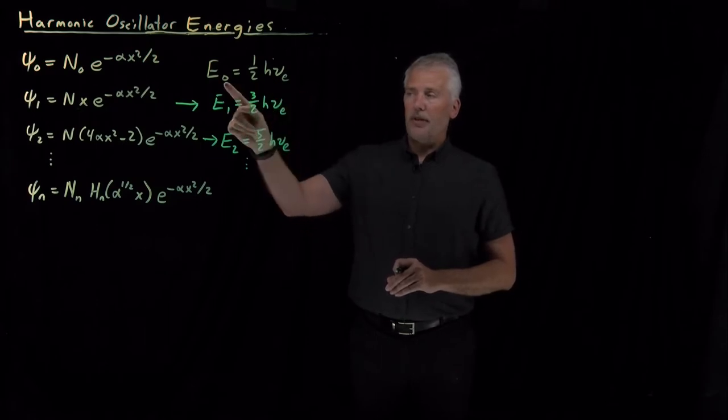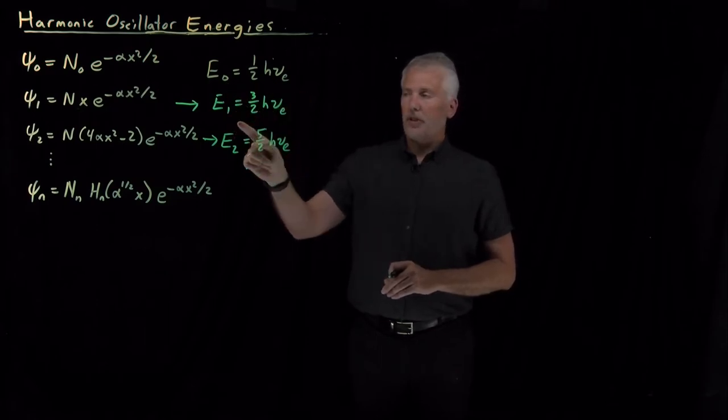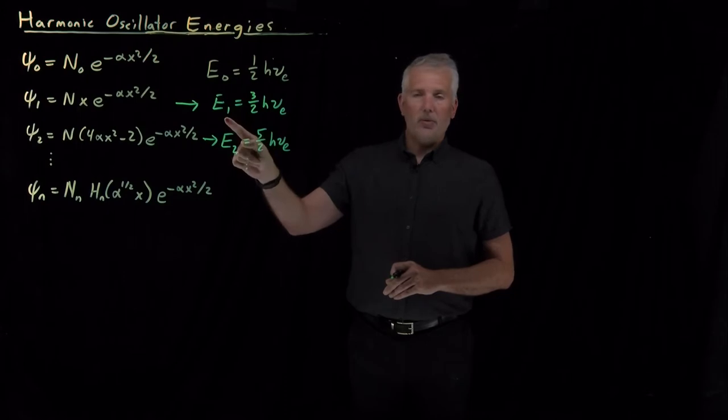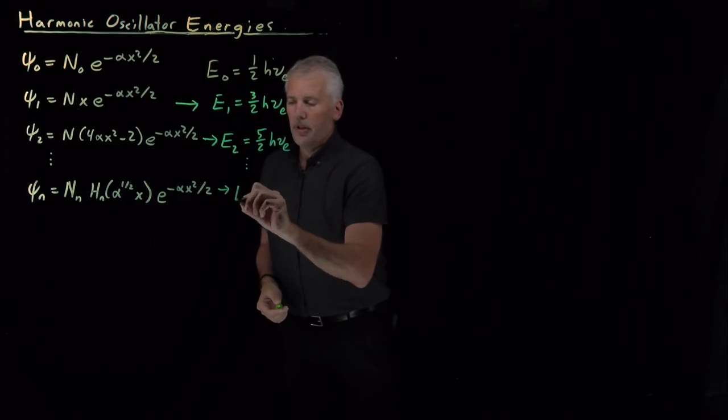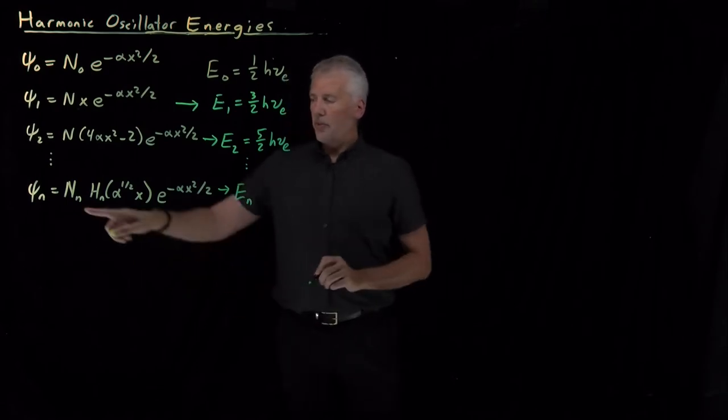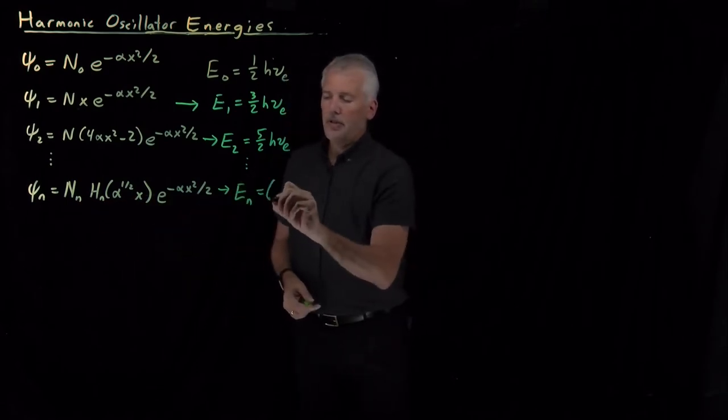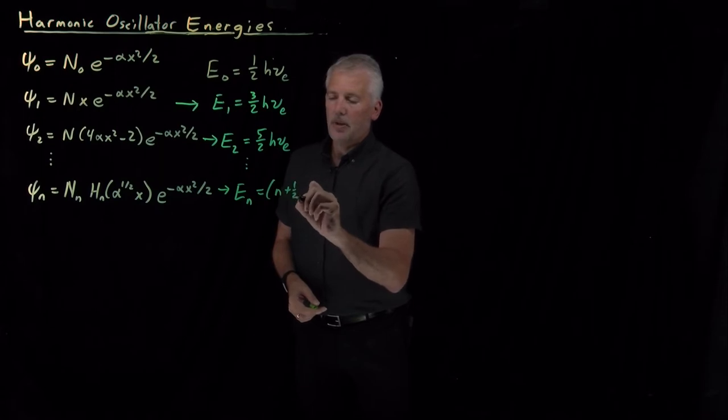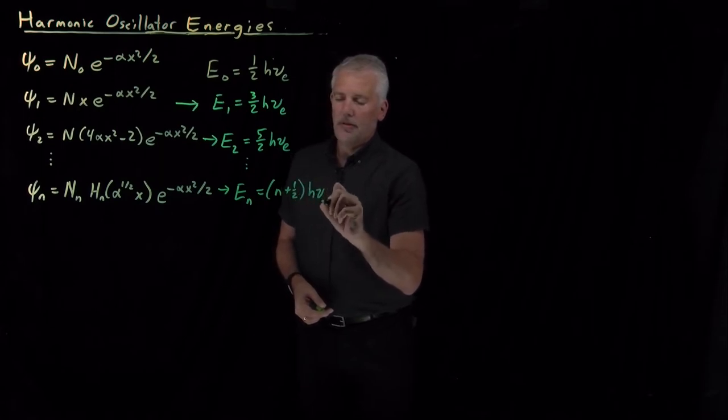In other words, one-and-a-half for the n equals one wave function, two-and-a-half for the n equals two wave function, and for the n-th wave function with this general form, the energy is n-and-a-half or n plus a half factors of h times nu.